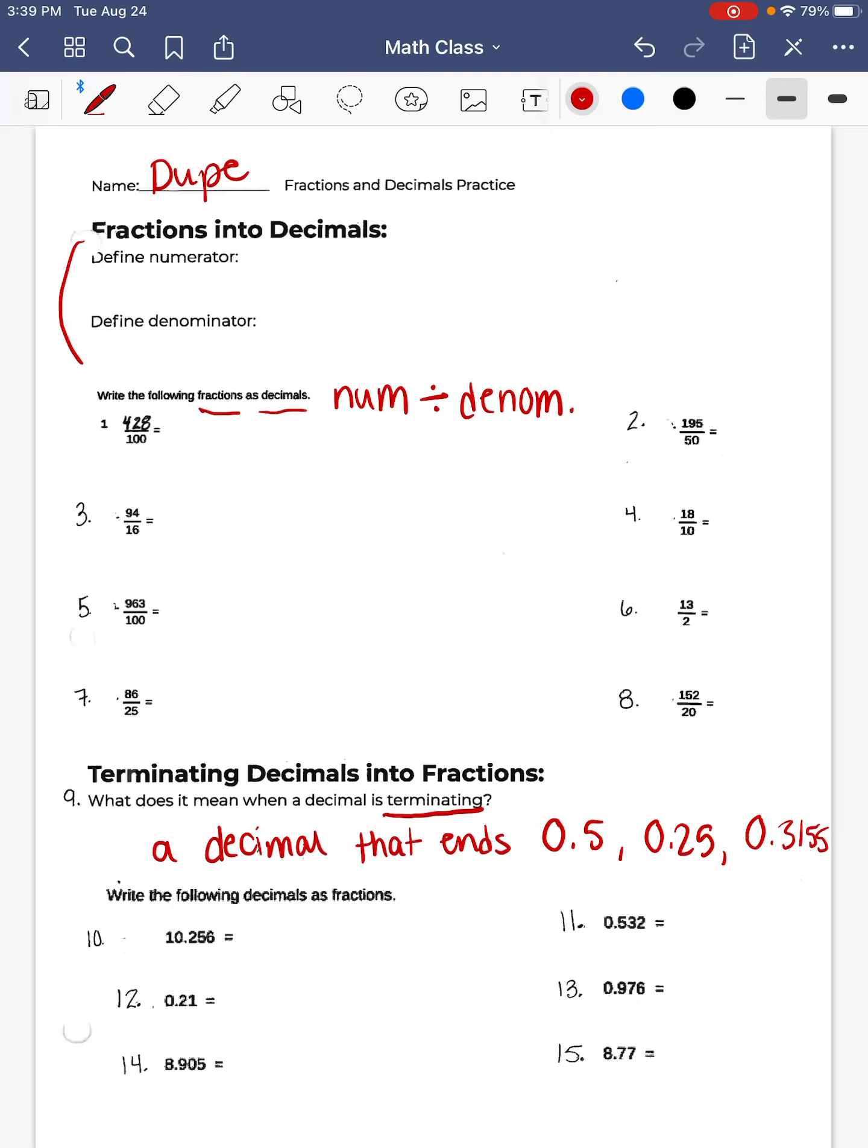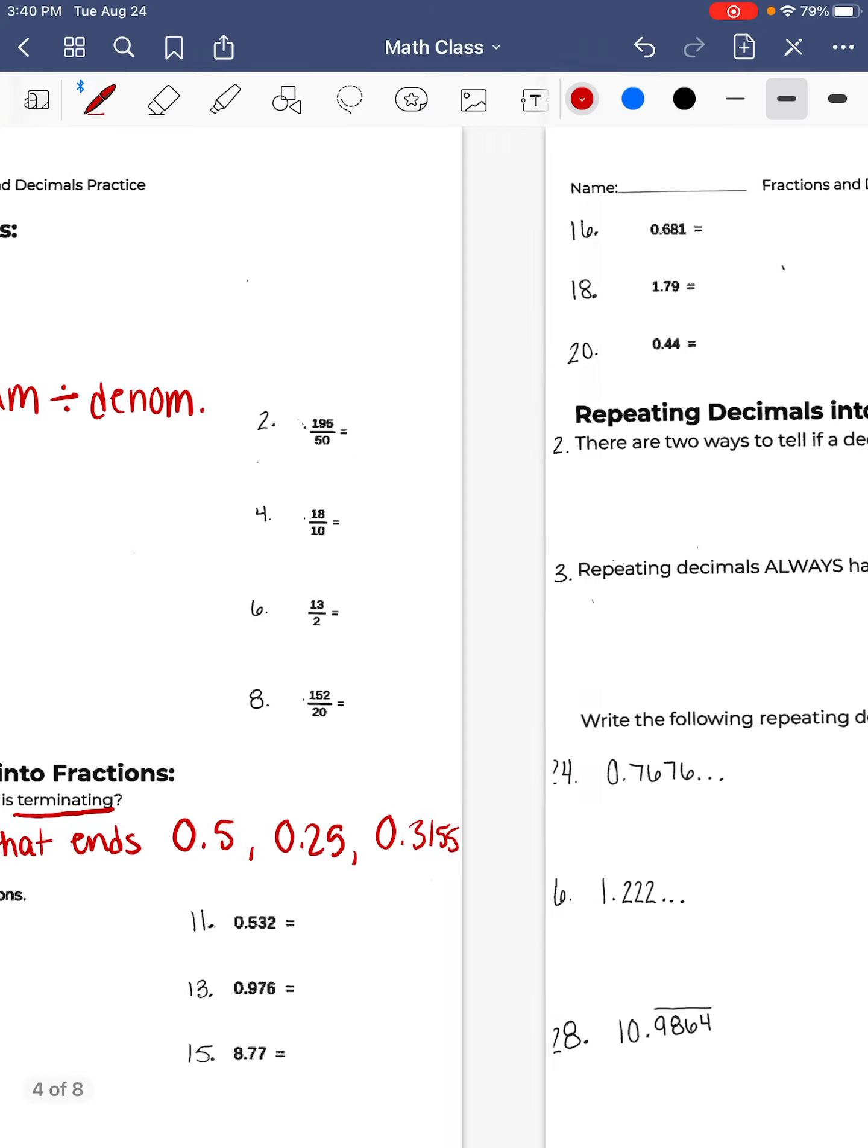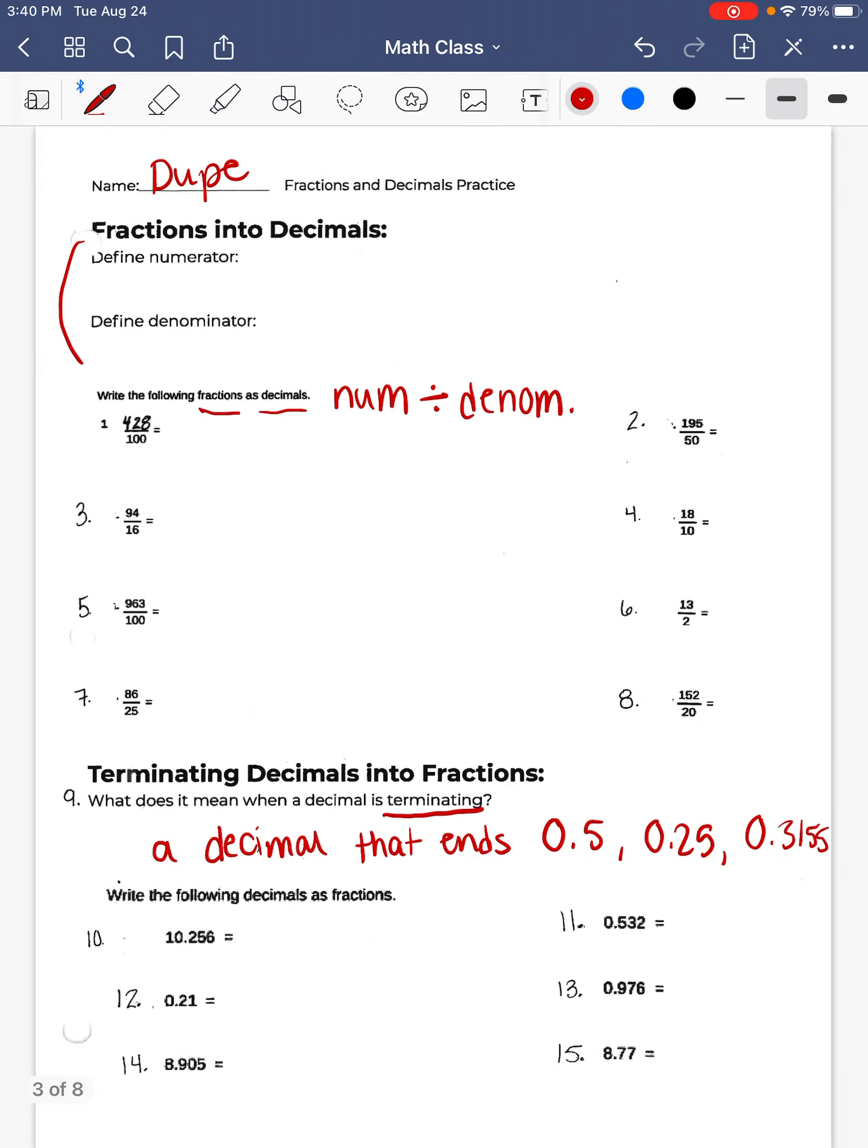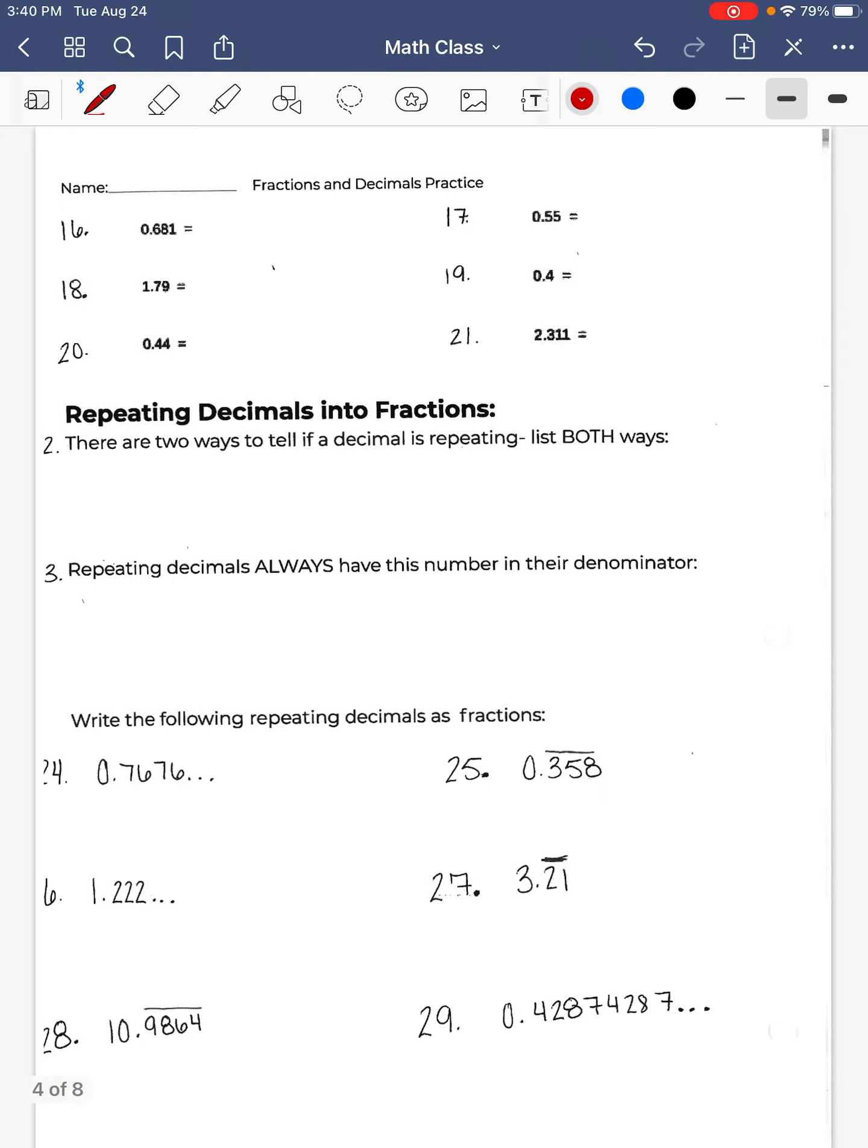So next, you are going to do numbers 10 through 15, and also 16 through 21. You are going to change all of these from decimals to fractions. Remember, in order to do this, you are going to type in the decimal. So for the first example, you have 10.256. Once you type that in, you are going to hit 2nd, and then PRB, and hit Enter, and it will change these decimals to fractions. So number 10 through number 21, you are going to complete on here.